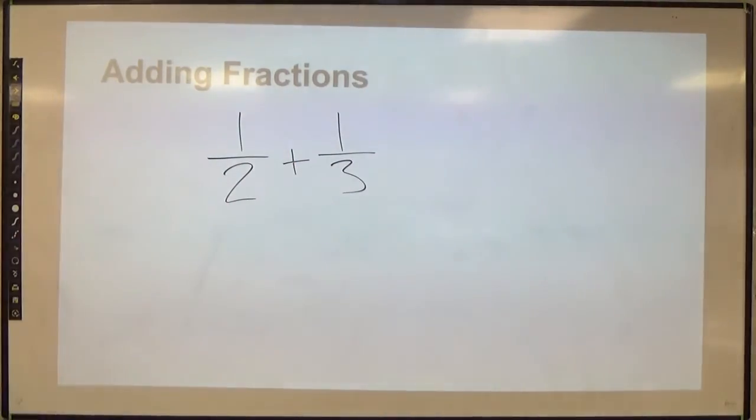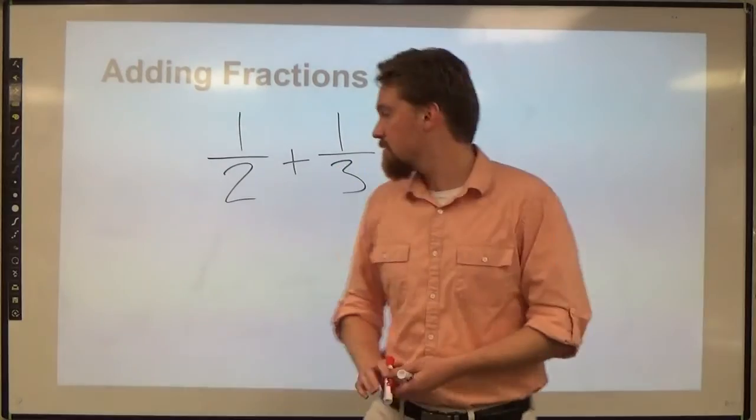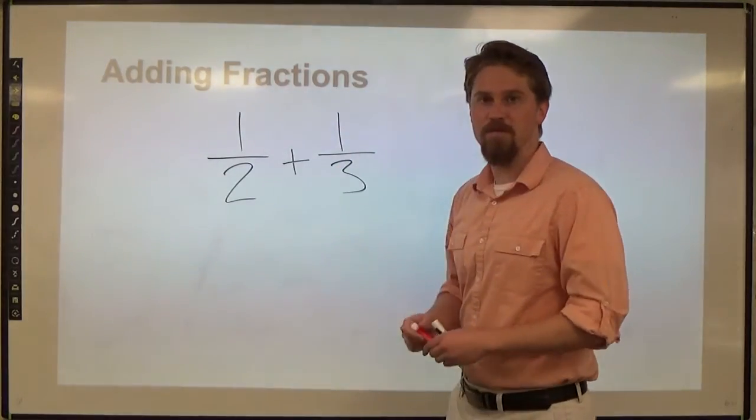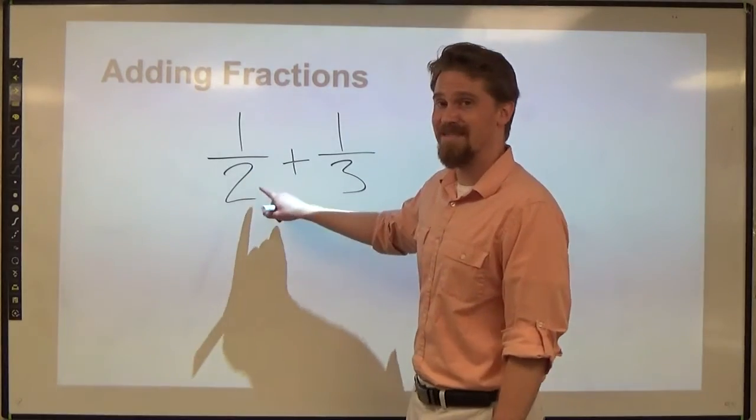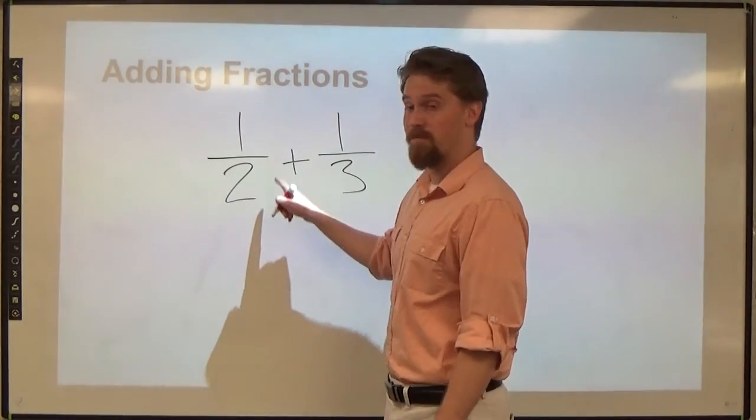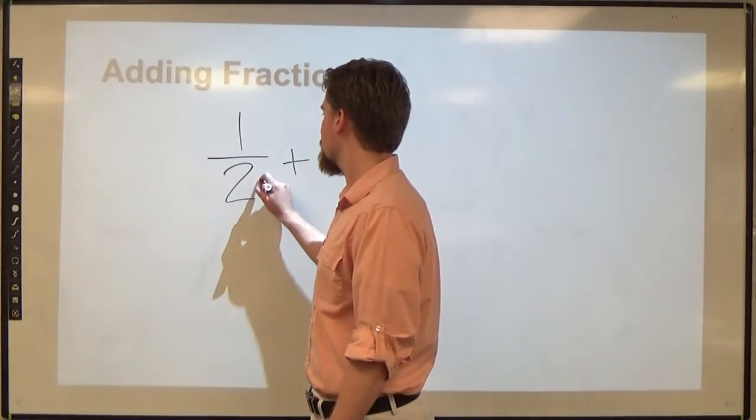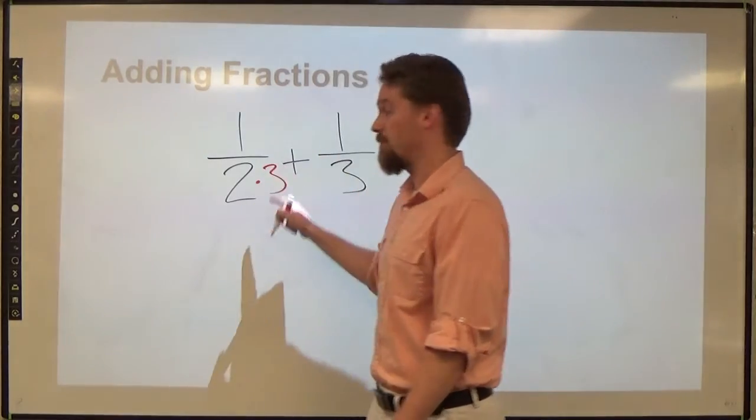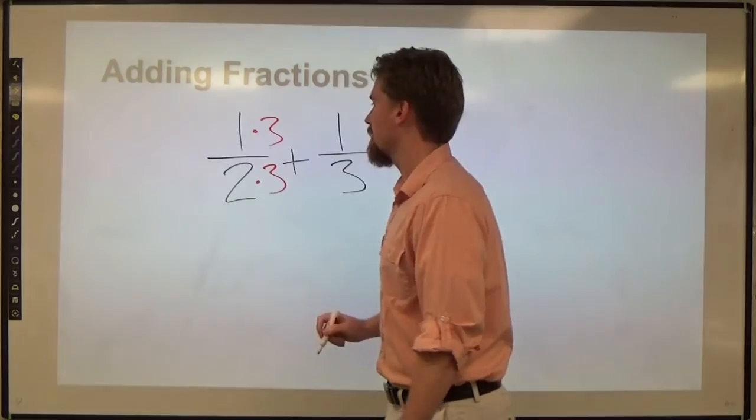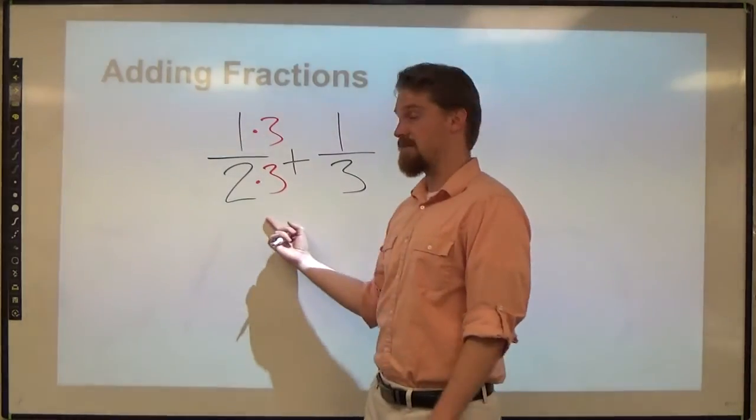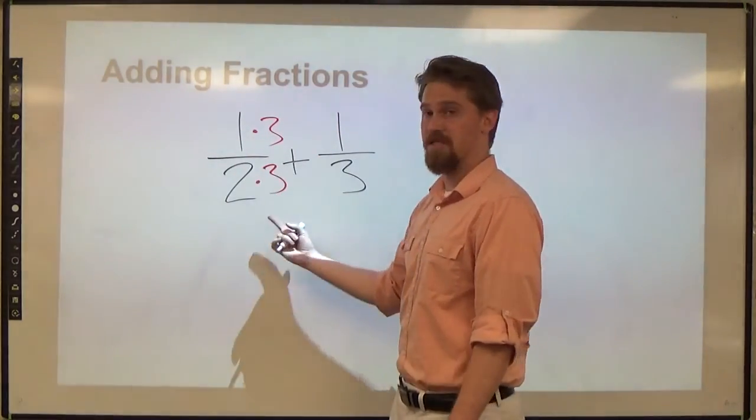Now, to get 2 and 3 into 6, we have to multiply by different things. So to change this fraction into something with a 6 in it, I need to multiply the bottom by 3. If I multiply the bottom by 3, I need to multiply the top by 3. That changes. That's going to be 6 now, and it's going to be 3 over 6.